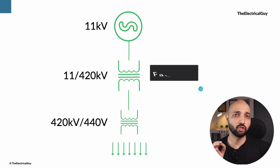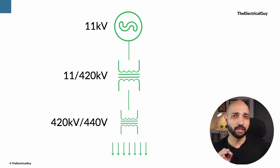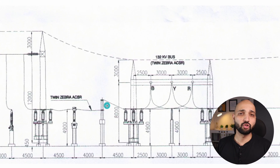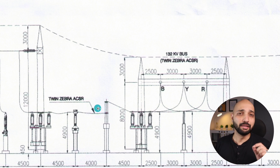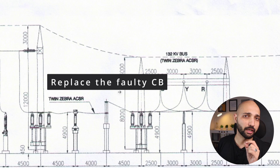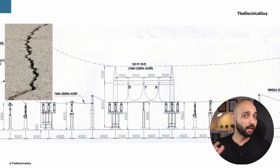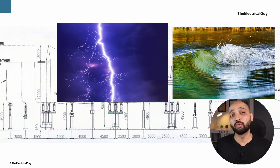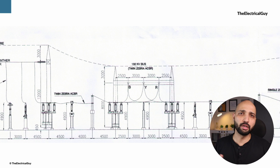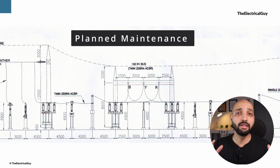Now let's say this step-up substation goes off for some reason. There can be multiple reasons — some issues can be controlled by the utility and some are not. For example, if a circuit breaker is malfunctioning, the utility can replace it with a spare. But situations like an earthquake, lightning strike, or flood are beyond the control of the utility, as is a complete shutdown for major maintenance.